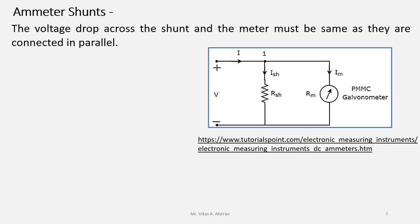The voltage drop across the shunt and the meter must be same as they are connected in parallel. Therefore, Ish into RSH equals Im into Rm.